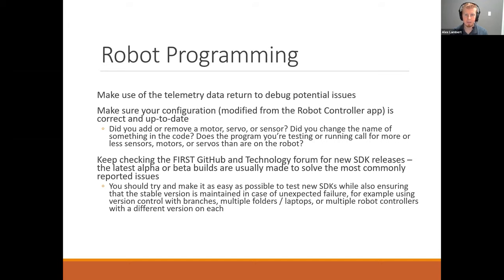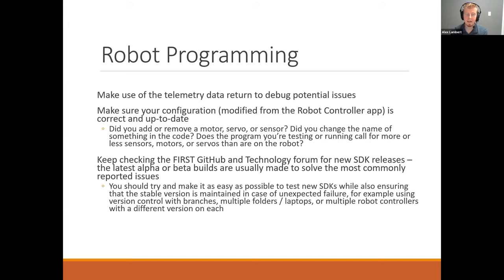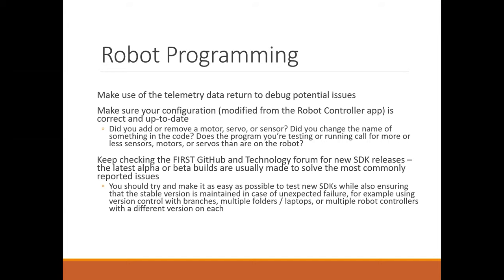Another thing to watch out for is making sure your configurations — the settings which link your programmatic variables to your actual hardware on the robot, set in the robot controller — are correct and up to date. I've seen teams on the field with the wrong configuration selected, so things were not working as expected. Issues can pop up if you add or remove sensors, motors, or servos. Always double-check that your program variable names match what you put in the configuration.